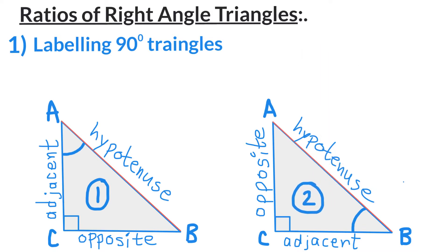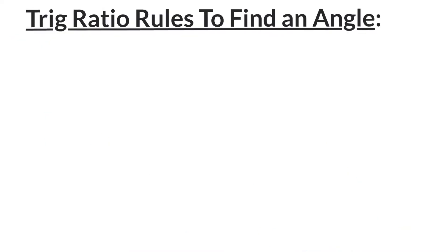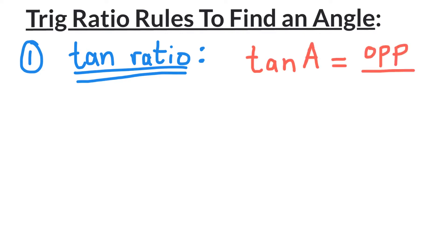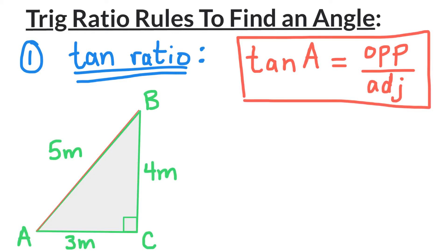Now let's look at trig ratio rules. Let's look at the first rule: the tangent ratio. The tangent ratio of an angle equals the opposite side divided by the adjacent side.